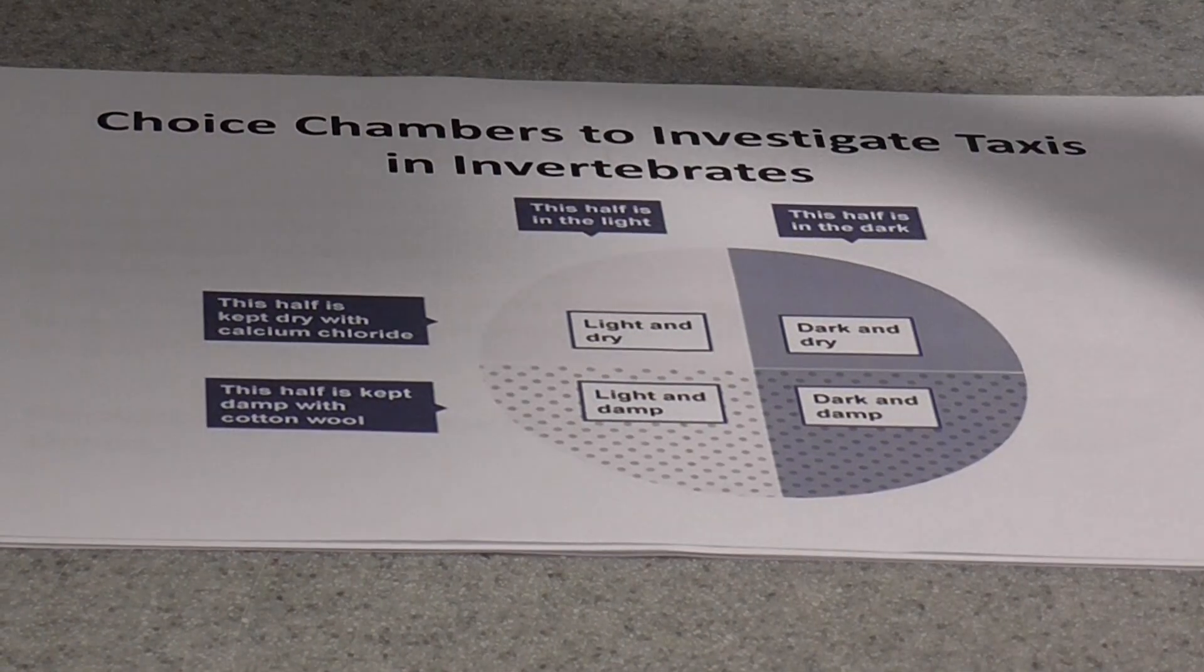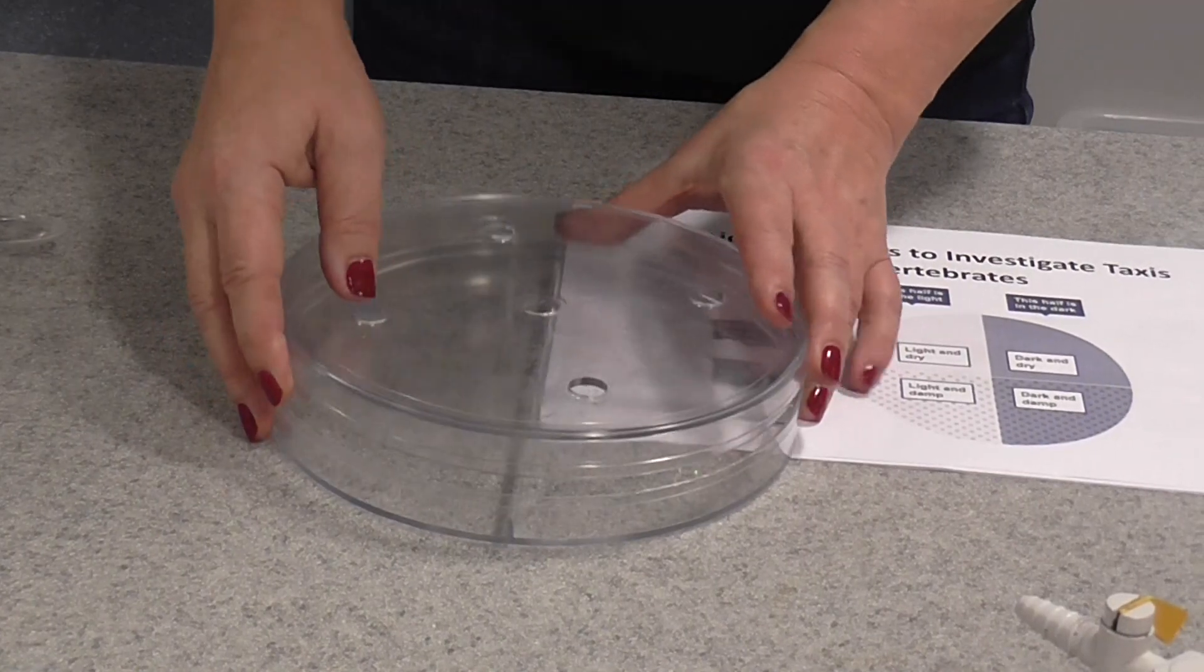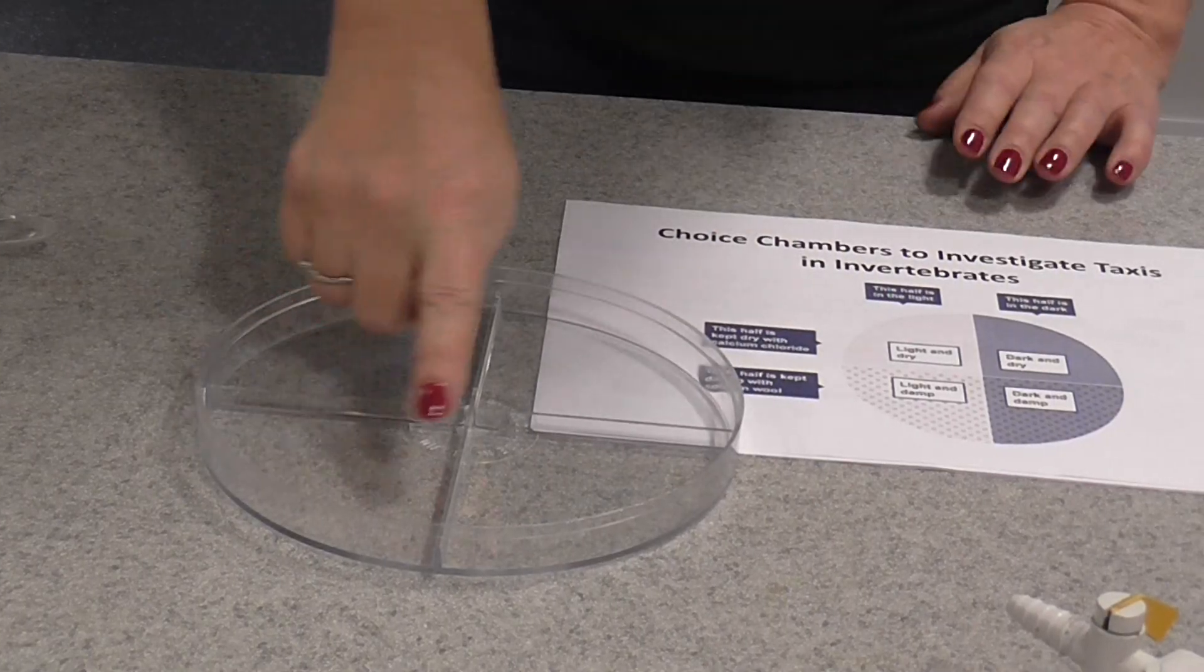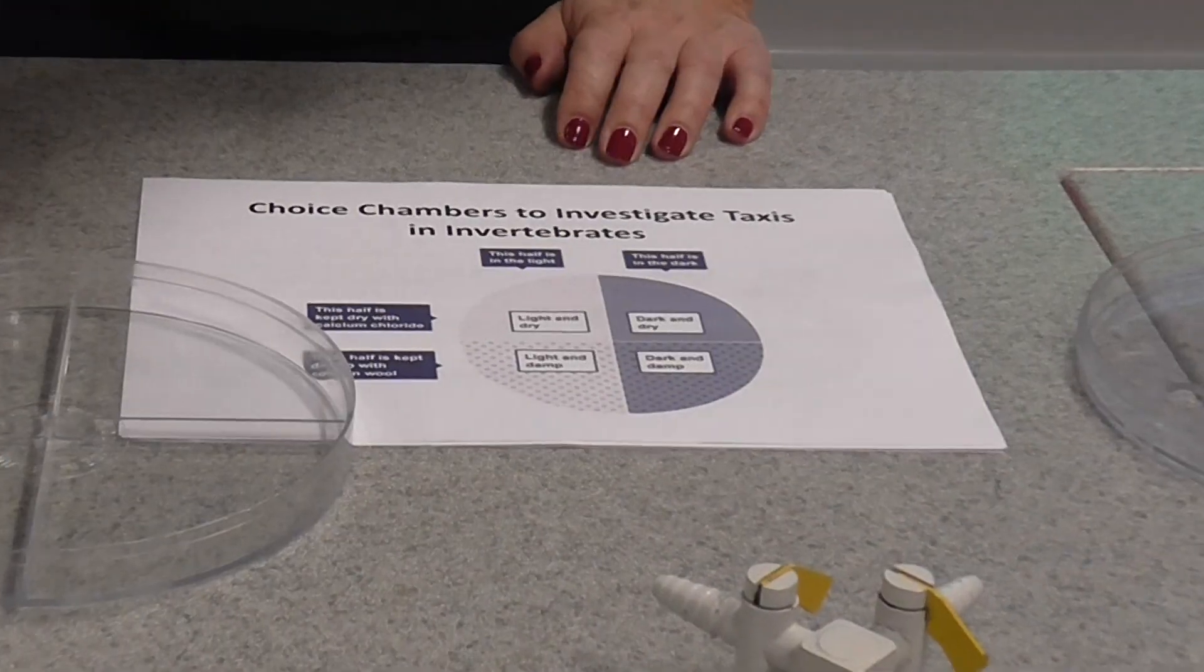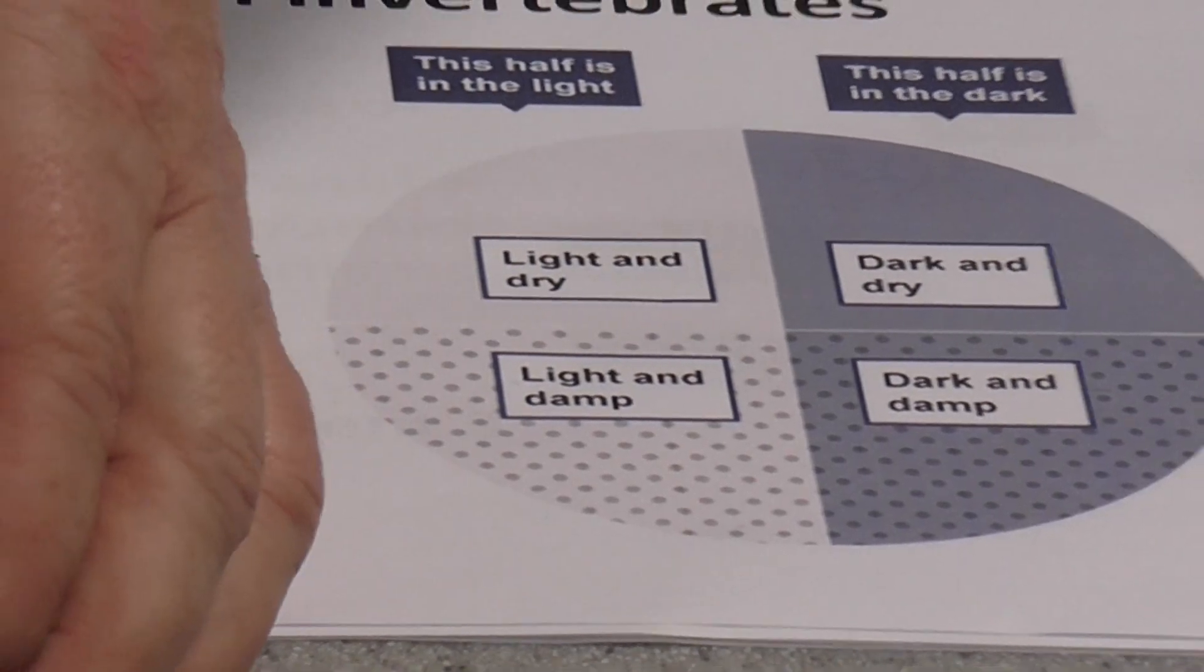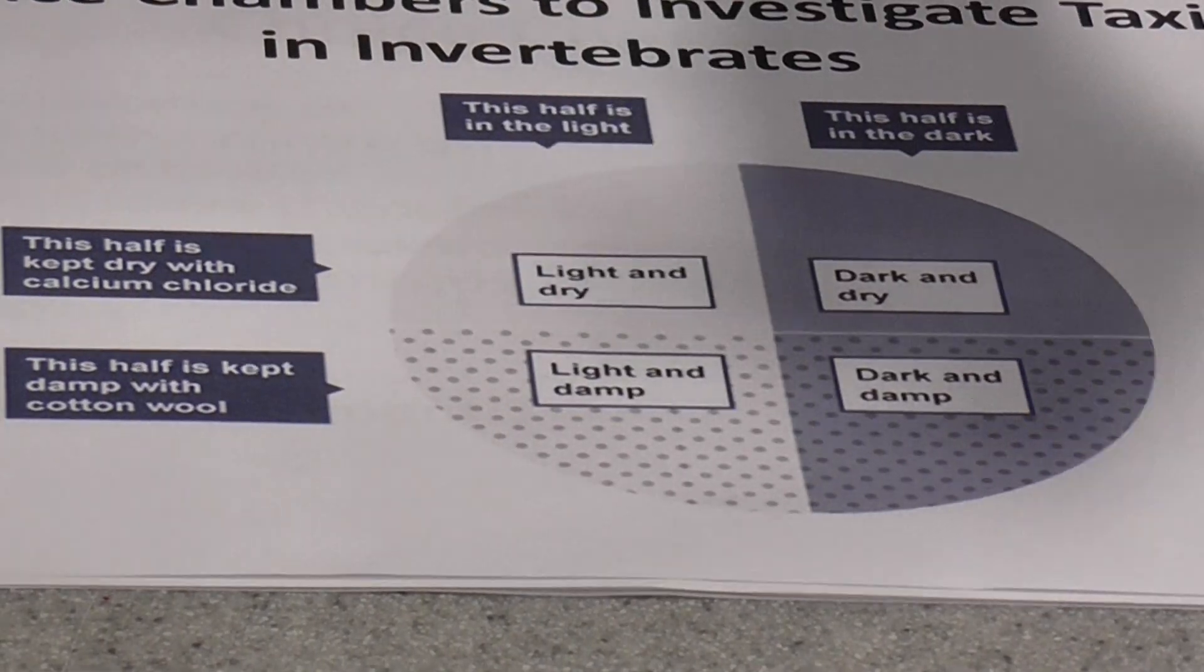Now this is a choice chamber and it's basically like a giant perspex petri dish. In the base, it's divided into four sections and the idea is that you create different conditions in these sections. Then you can place your maggots in there or whatever you're using, return the lid and you can observe where they prefer to move.